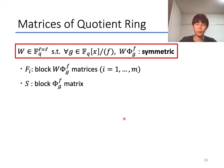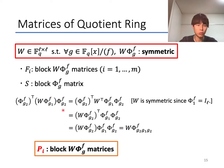To solve this problem, we introduce the concept of an ℓ times ℓ invertible matrix W, such that for any g in F_q[x]/(f), W·Φ_g is symmetric. Here, we suppose that P_i is constructed as block W·Φ_g^f matrices, and S is constructed as block Φ matrices. Then, through the transformation like this, we obtain that P_i is block W·Φ_g^f matrices.